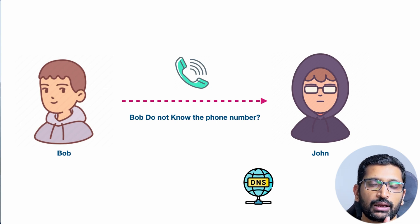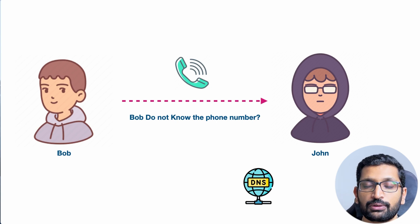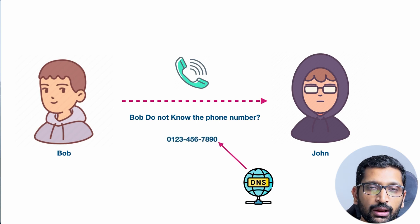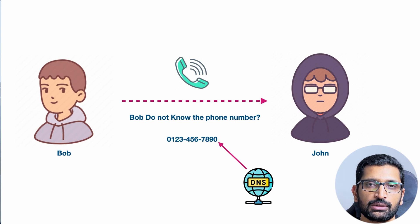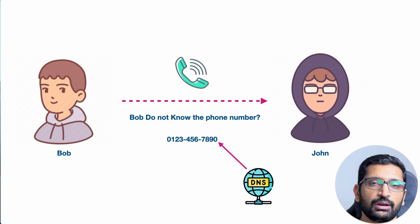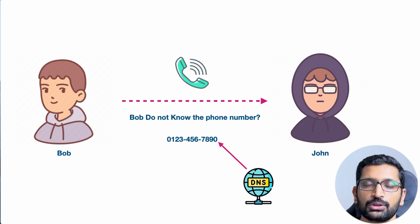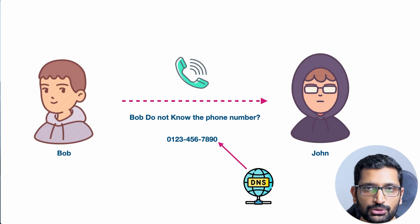Comparing the DNS with our friend's analogy, DNS will try to help Bob find the contact number of John. And once it finds the contact number of John, it will pass that contact number to Bob so that Bob can make a call to John.